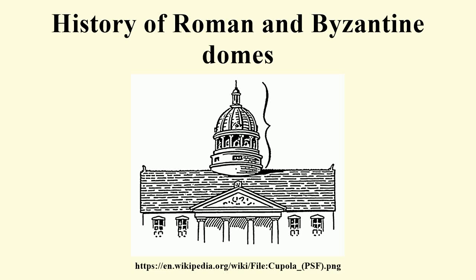The history of Roman and Byzantine domes traces the architecture of domes throughout the ancient Roman Empire and its medieval continuation, today called the Byzantine Empire. Domes were important architectural elements in both empires and had widespread influence on contemporary and later styles, from Russian and Ottoman architecture to the Italian Renaissance and modern revivals. The domes were customarily hemispherical, although octagonal and segmented shapes are also known, and they developed in form, use, and structure over the centuries.